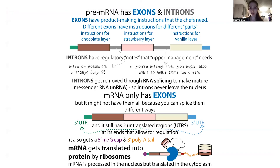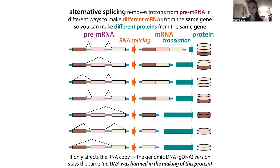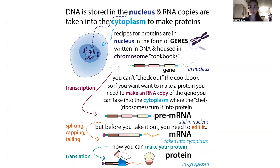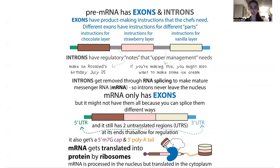Splicing offers a cool opportunity where you can splice it in different ways — what we call alternative splicing — which allows you to make different versions of the protein. It's like making different versions of a cake from the same recipe. This is a really cool thing about having that step where you go from the pre-messenger RNA to the mature messenger RNA.